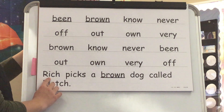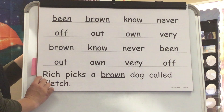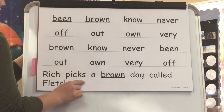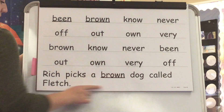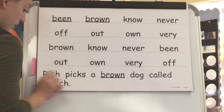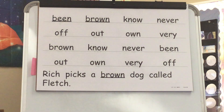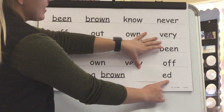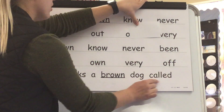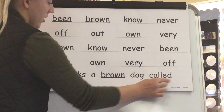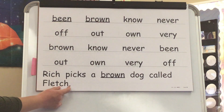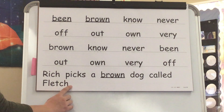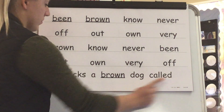Time for our sentence. Sound. Excellent. It's sound. I. Sound. Ch. Blend? Rich. Word? Rich. Word? Rich. Word? Picks. Rich picks. Word? A. Word? Brown. Rich picks a brown... Word? Dog. Rich picks a brown dog. This word is call. Base word. Call. Ending, say D. D. Blend. Called. Word. Called. Rich picks a brown dog called. Sound. Eh. Sound. Ch. Blend. Fletch. Word. Fletch. Rich picks a brown dog called Fletch. Your turn. Rich picks a brown dog called Fletch. Great job.